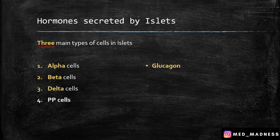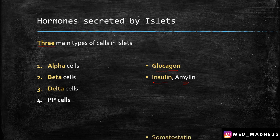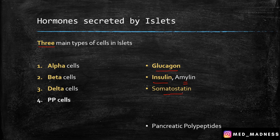Recall that the alpha cells secrete glucagon — a very important hormone. Beta cells secrete insulin and amylin. Insulin is very important once again, and amylin's function is very poorly understood. Delta cells secrete somatostatin and the PP cells secrete pancreatic polypeptides.